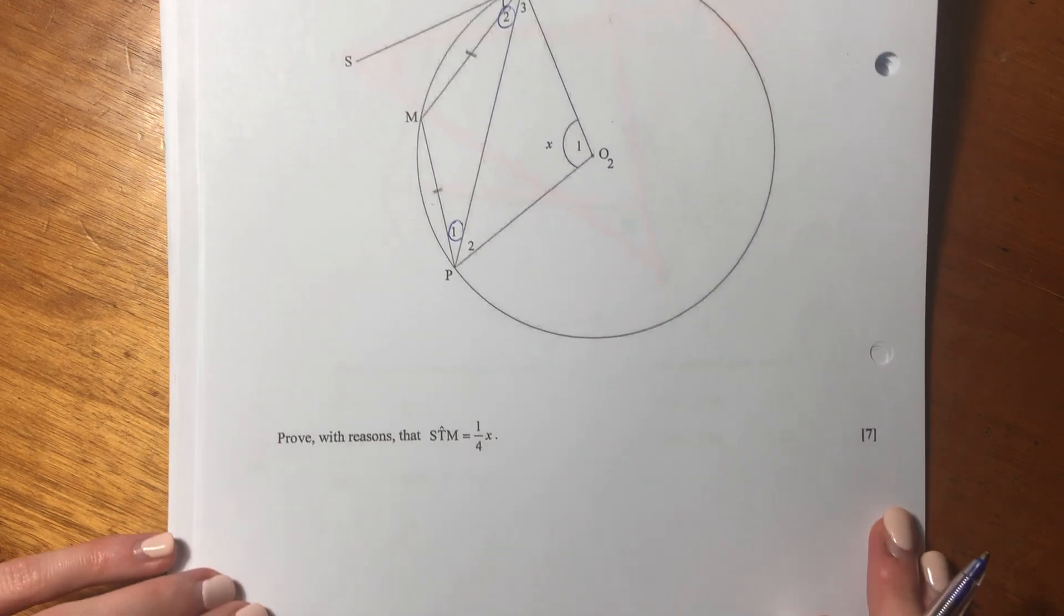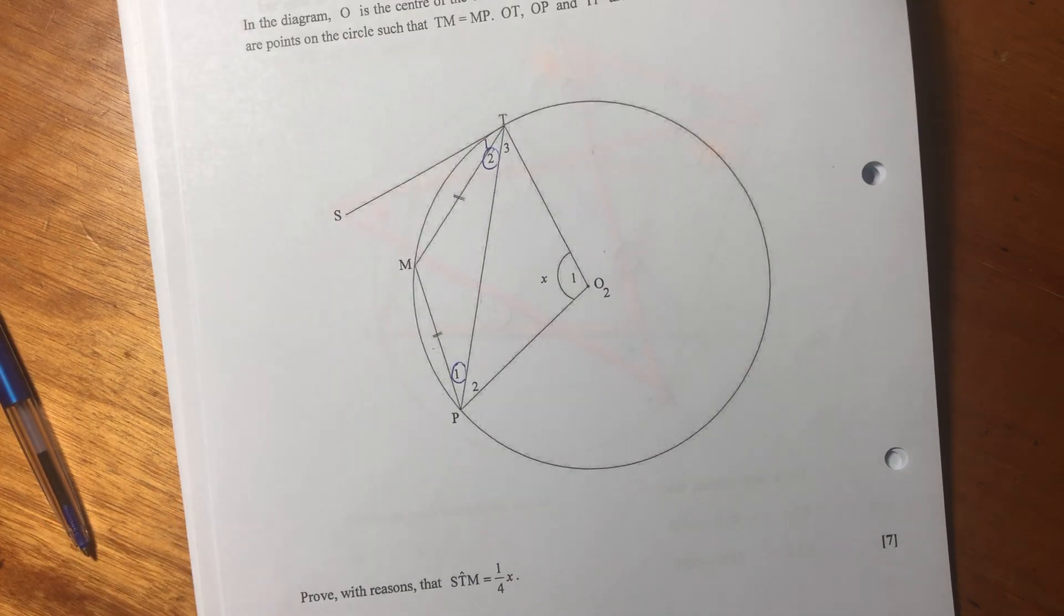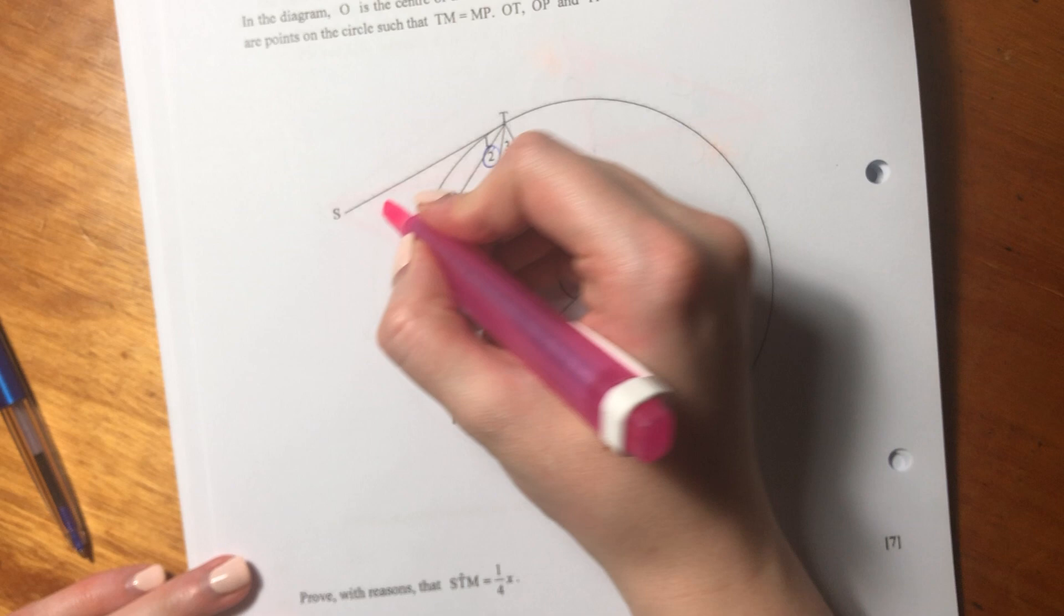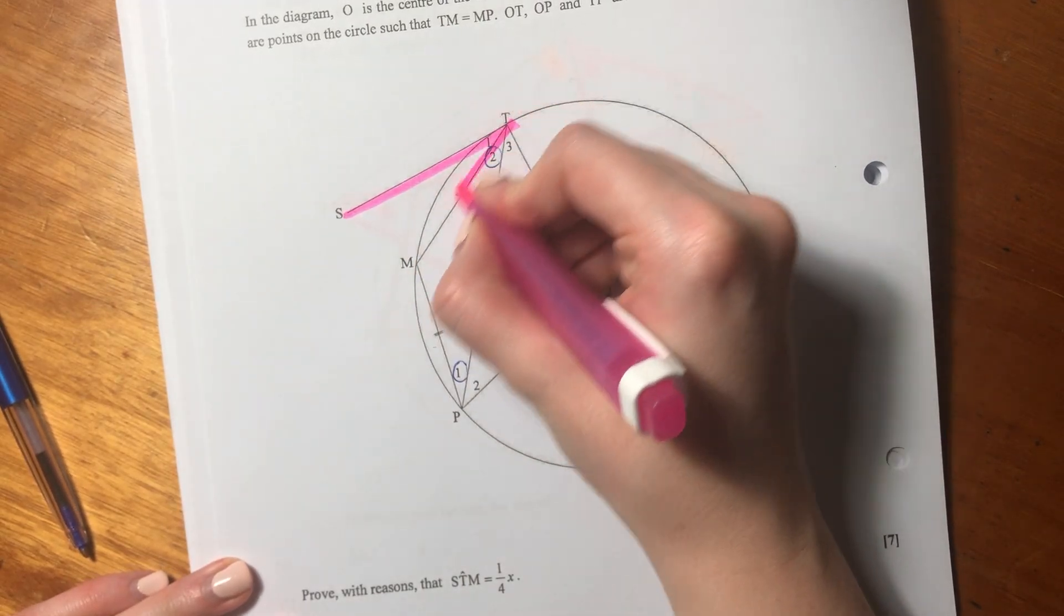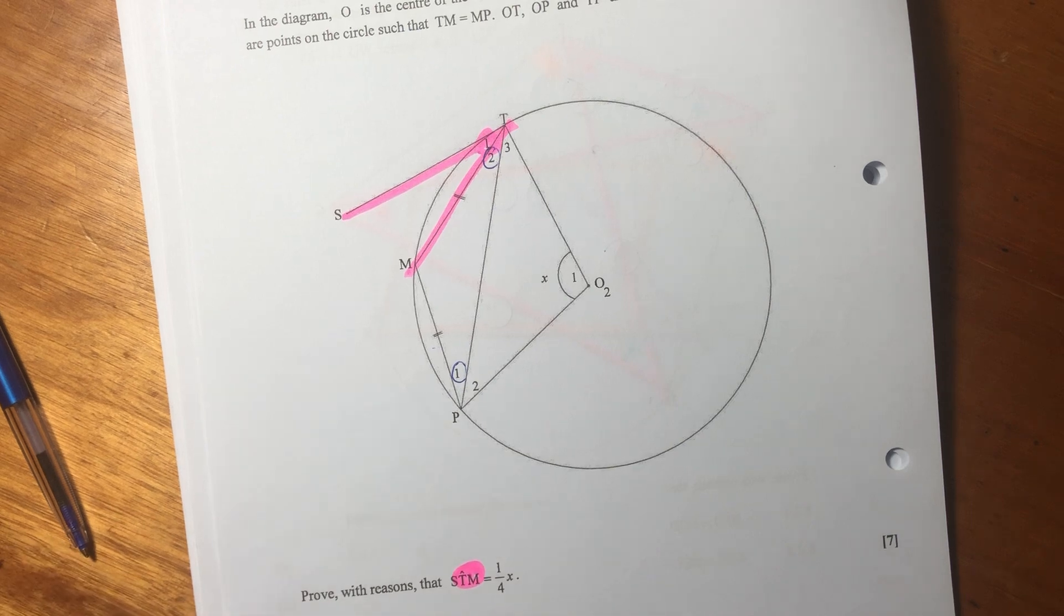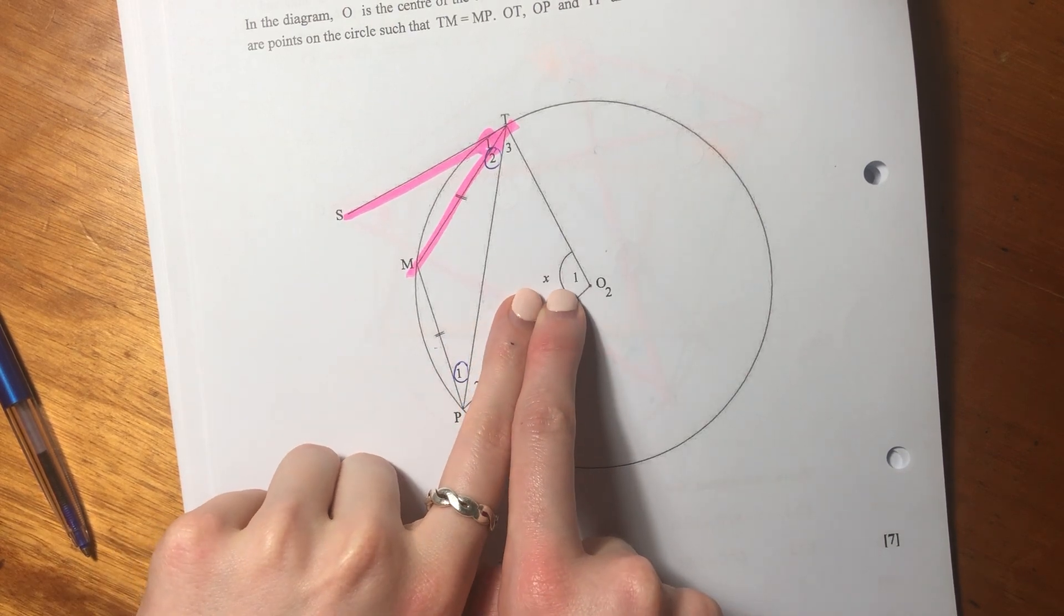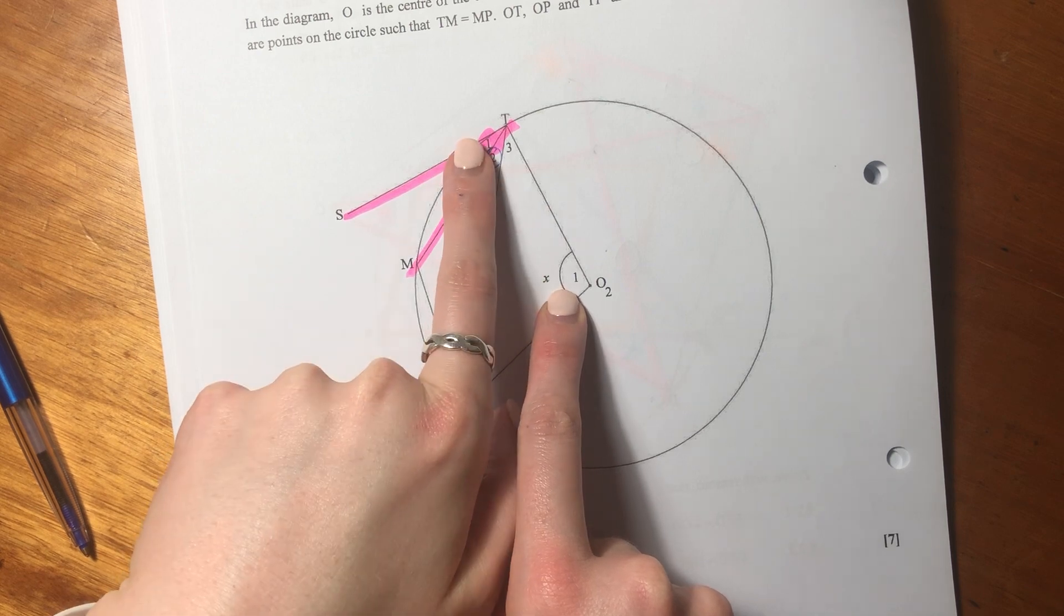Let's see what they're asking us to prove. It says prove with reasons - you should know that you must use reasons - that angle STM is a quarter X. So what are we interested in? Let's highlight what we're interested in. S, T, M. So that is what we're interested in. We're interested in T1. So let's see what we can do.